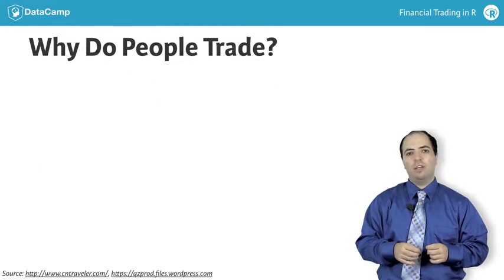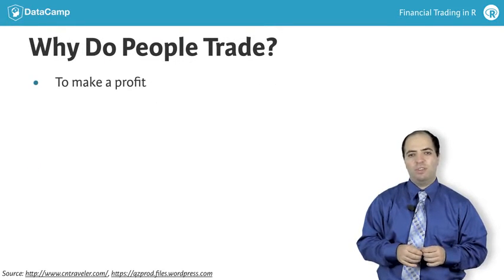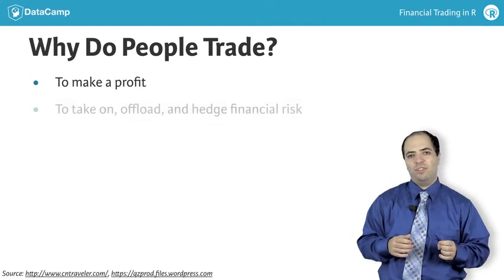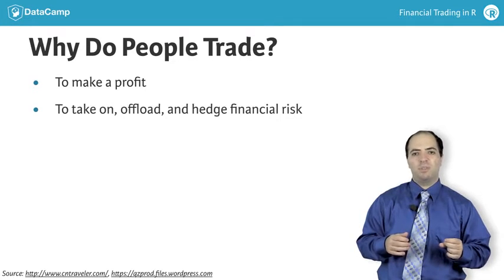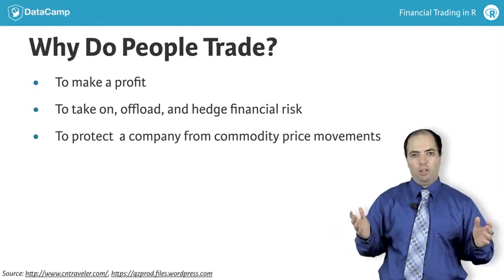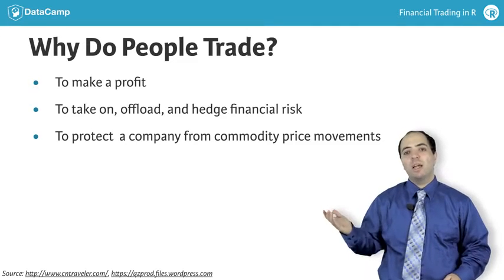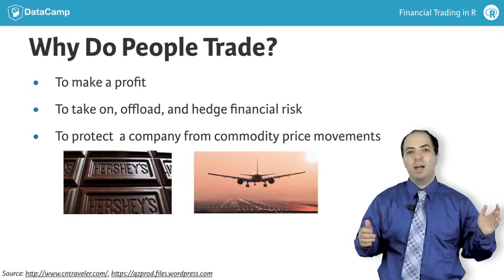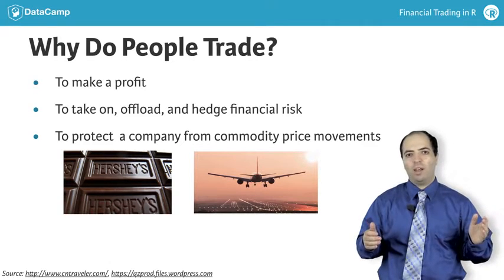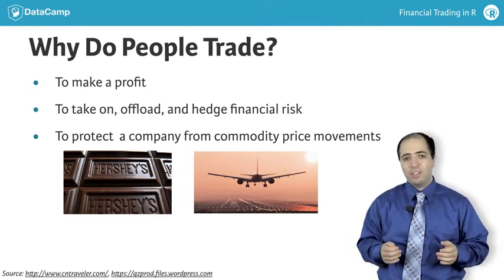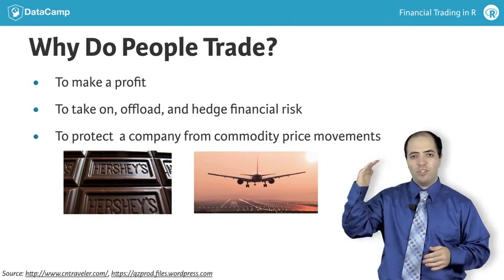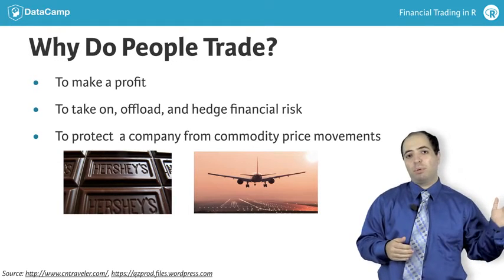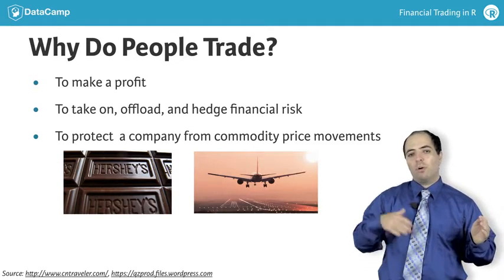While making a profit from acting on trading opportunities is one reason for trading, there are others. Certain companies whose business revolves around commodities enter the financial markets to protect themselves from the business impact of price movements of an underlying commodity. For example, Hershey's might want to establish a good price for chocolate, airlines want to minimize the impact the price movement of oil has on their business. If the price of oil rises too much and an airline doesn't protect itself against that, it would either have to raise ticket prices while its competitors don't, or make a lot less profit.